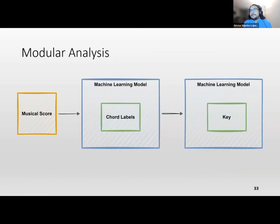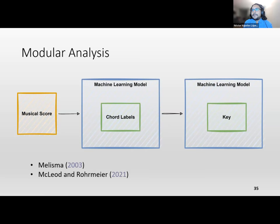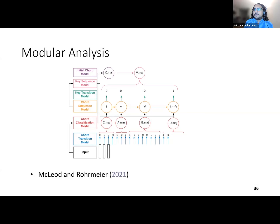The modular approach has a musical score feeding into independent classifiers specialized for chord label, key, inversion, etc. A notable older project called MIMISMA aimed for this analysis, and more recently McLeod and Rohrmeier did this using deep neural networks. In their diagram, the input feeds into independent classifiers: a chord transition model, a chord classification model, a chord sequence model, and so on — a complicated multi-stage approach to retrieve the final Roman numeral label.